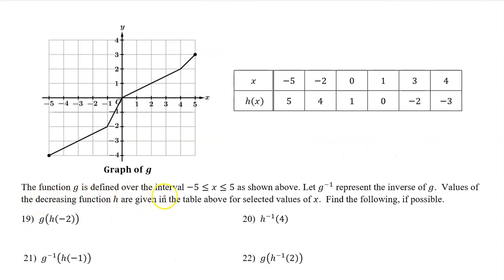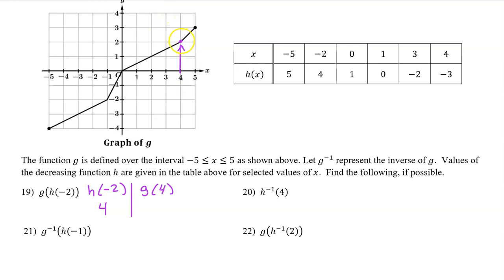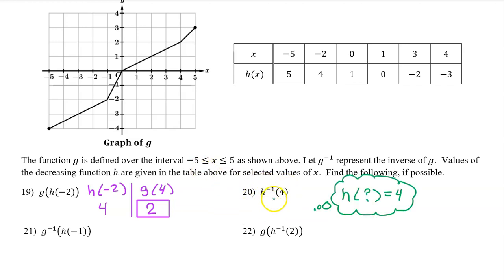The function g is defined over the closed interval from negative 5 to 5 as shown above. Let g inverse represent the inverse of g. Values of the decreasing function h are given in the table above for selected values of x. Find the following if possible. Number 19: we work from the inside out, beginning with h at negative 2. h at negative 2 is 4. Now we move to the outside and evaluate g at 4. g at 4 is 2. Number 20: evaluate h inverse at 4. Ask yourself, h at what is equal to 4? h at negative 2 is equal to 4. So that's the answer.